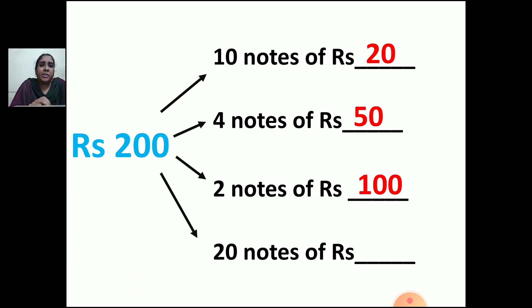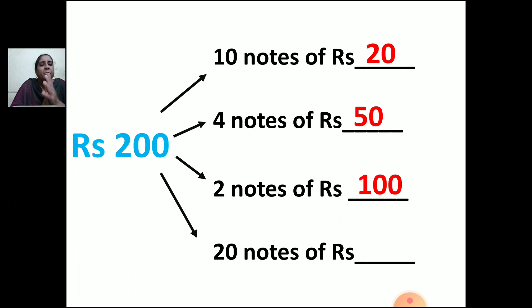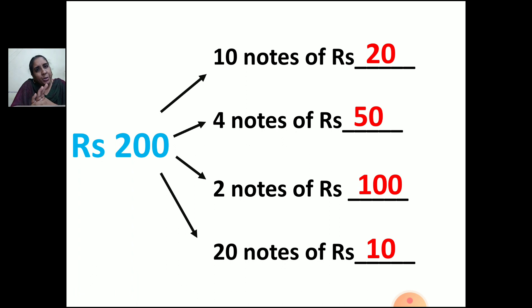Now, 20 notes of rupees dash. You need 20 notes — of which currency will you take to make 200 rupees? 20 will come in the table of 20 when 1s are there, and one zero from 200 — so which rupees is it? 10 rupees. So you will take 20 notes of 10 rupees to make 200 rupees.